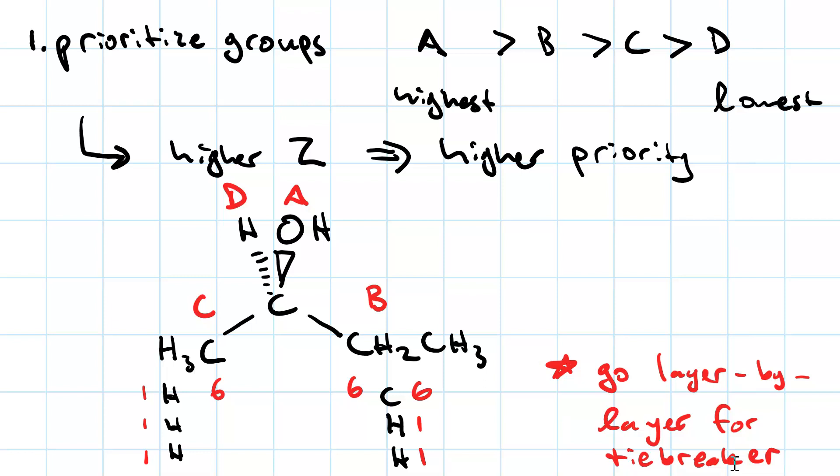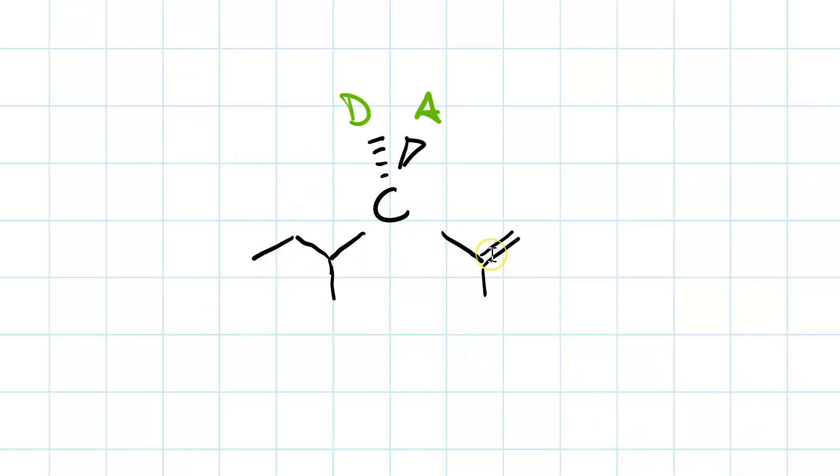So you go layer by layer for your tiebreaker and you keep going until there's a clear winner. How would I break this tie? Right, because clearly we've got a C and a C for the first layer. So we have to go to the second layer. My second layer, for the carbon on the left, is a carbon, a carbon, and a hydrogen. So C, C, H. For the carbon on the right, I've only got two atoms bonded, another carbon and another carbon. But because there's a double bond, that counts for two. So it's C, C, C. That means that this group with a double bond is higher priority, despite the fact that the molecular weight of the sec-butyl fragment weighs more.